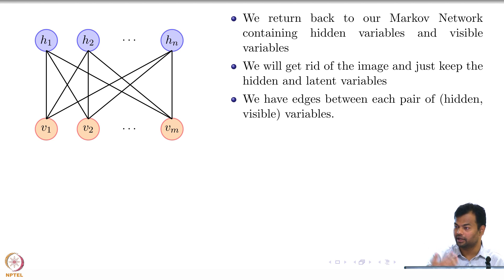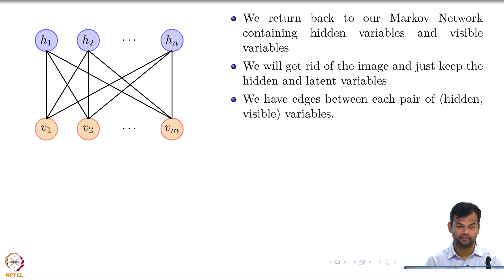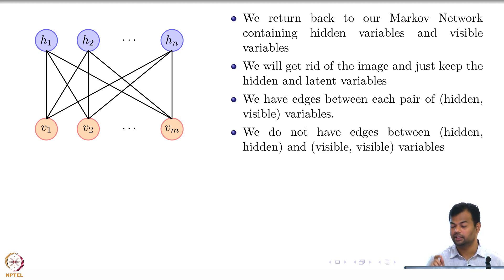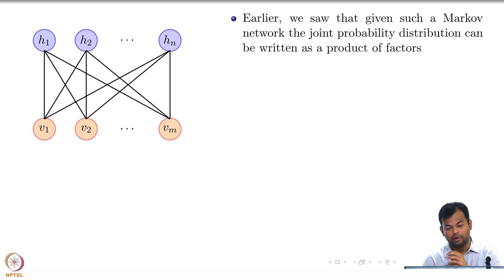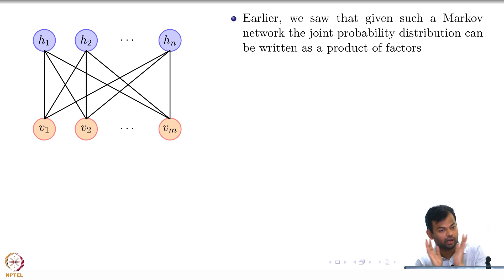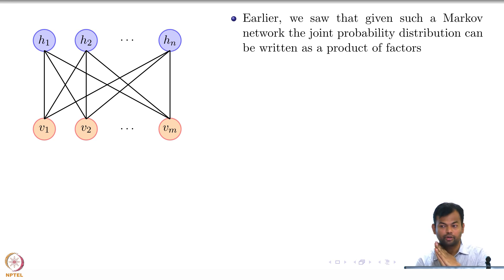As someone said, this is a bipartite graph, so we have edges between each pair of hidden and visible variables. We do not have edges between hidden-hidden variables or visible-visible variables. Earlier we saw that given such a Markov network, you could actually get the joint probability distribution by writing it as a product of factors.